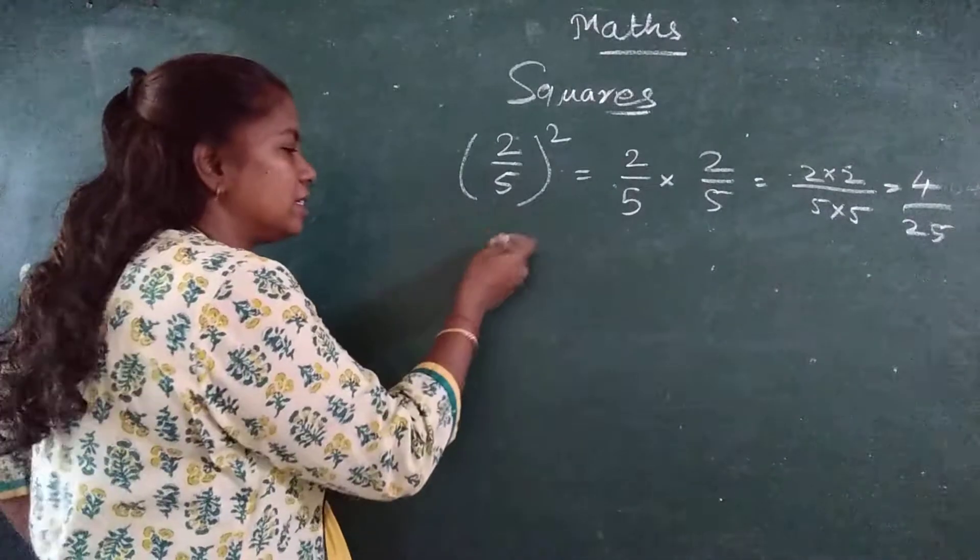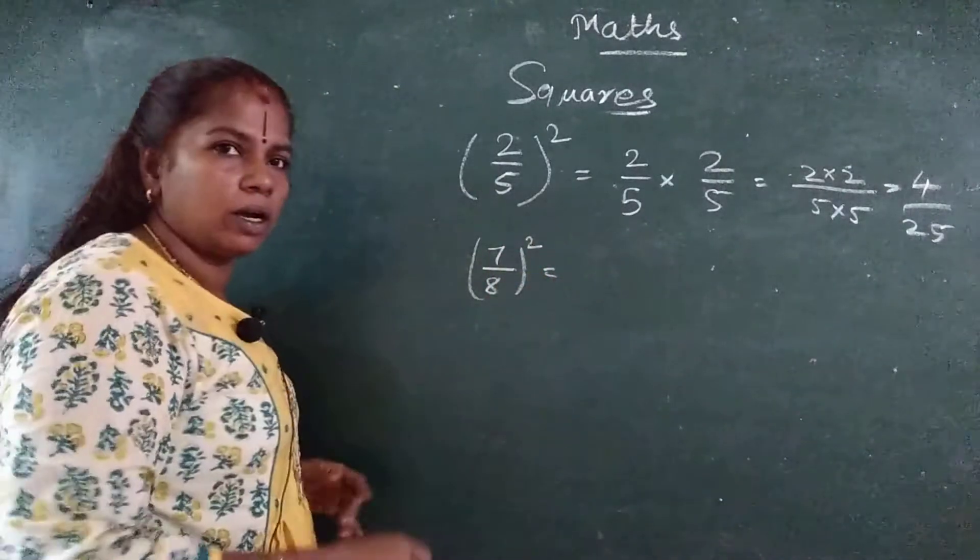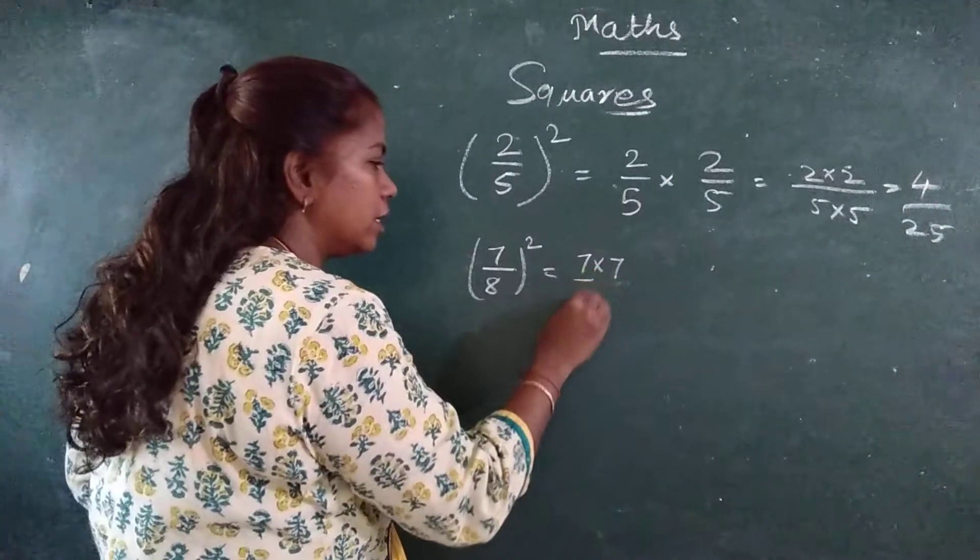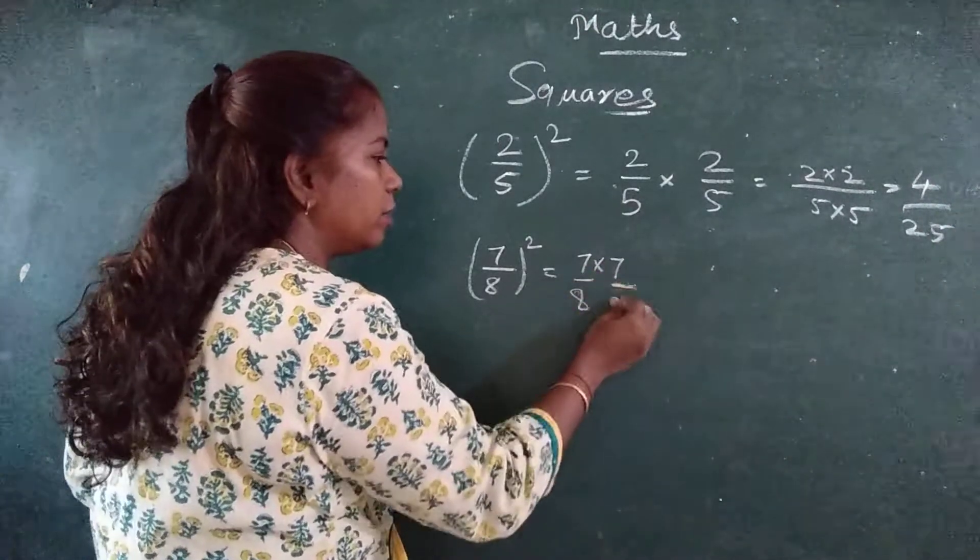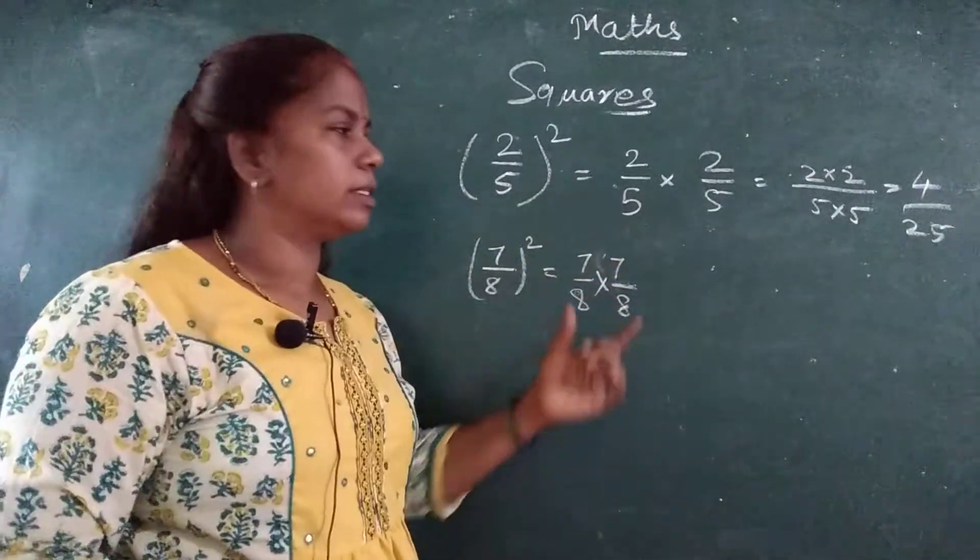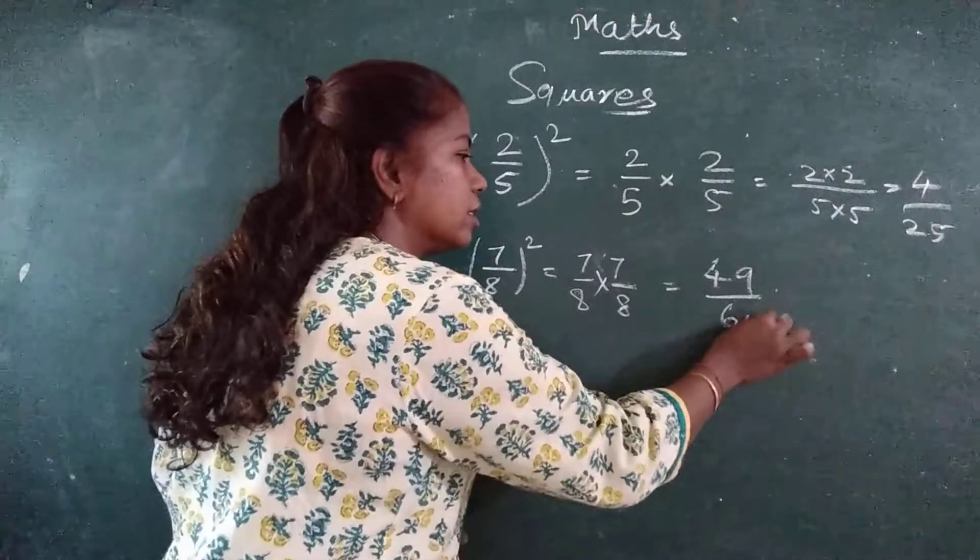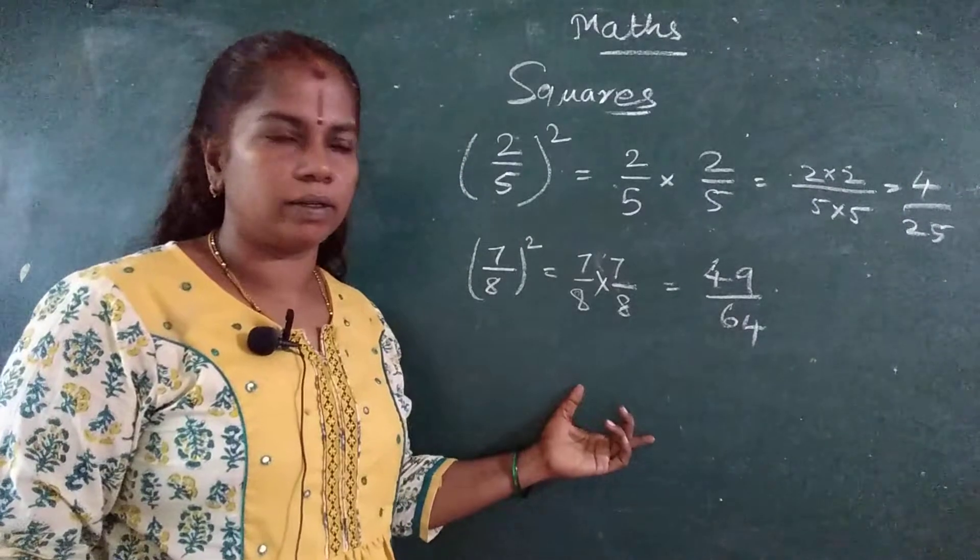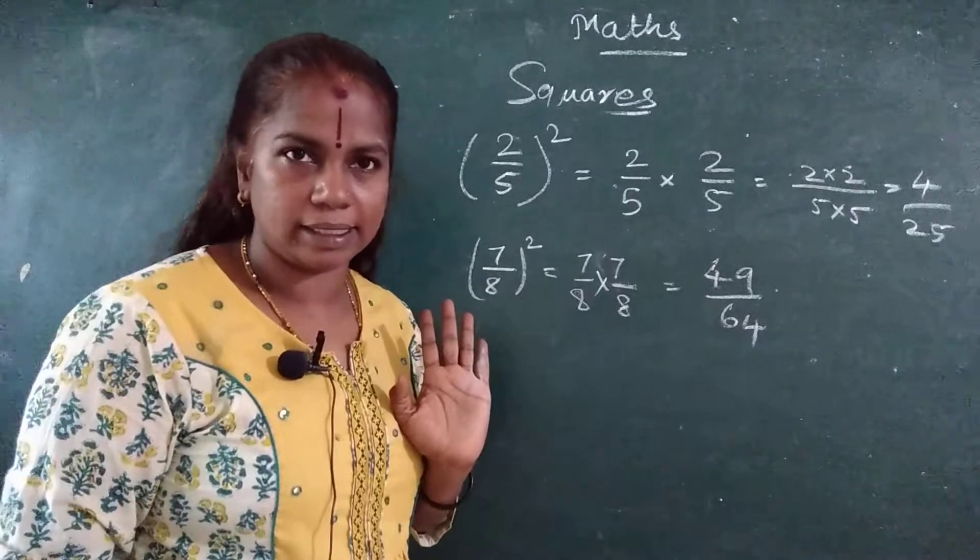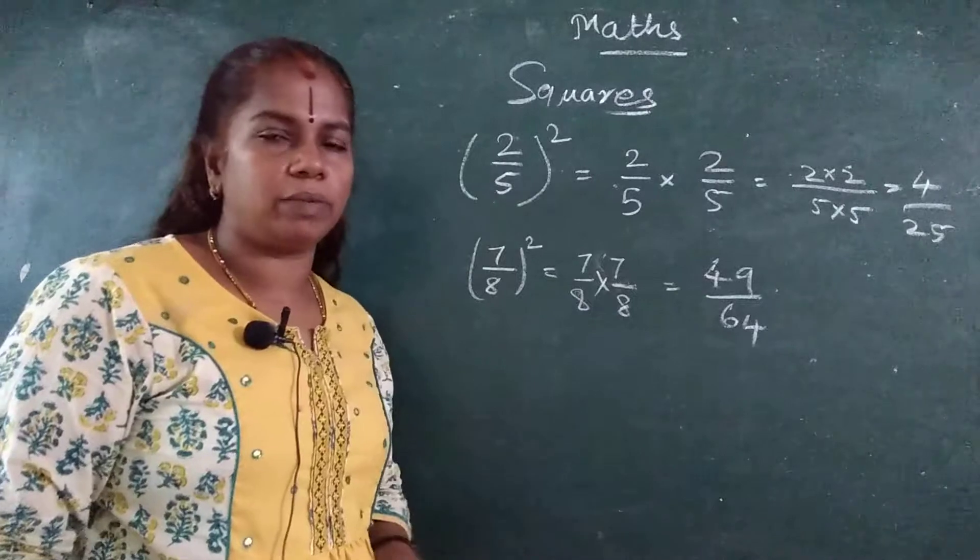Another number. I will take a little big number. 7 upon 8, the whole square. How will you do? 7 upon 8 into 7 upon 8. 7 7's are how much? 49. 8 8's are how much? 64. Got it? 49 upon 64. Fractions is very easy. Only thing, numerator you will multiply with numerator, denominator you will multiply with denominator.